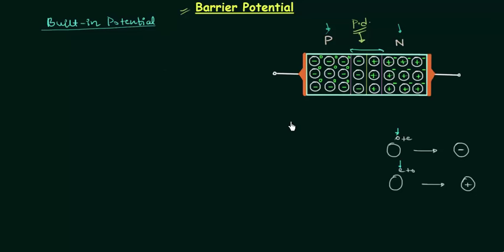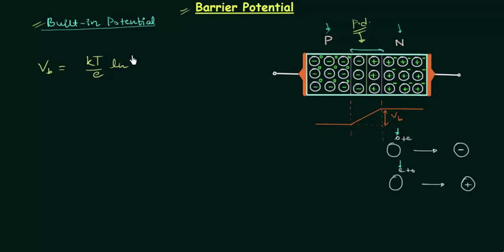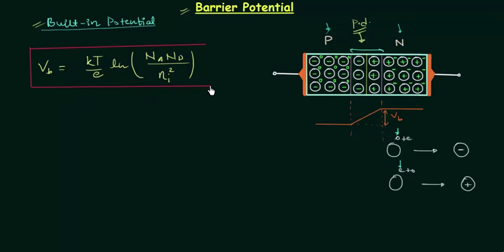This potential difference is also called built-in potential. In this lecture we will see the expression for built-in potential and solve one numerical problem on it. The expression is: V_B = (KT/e) × ln(Na·Nd / Ni²). The derivation is not important in this course — you only have to remember this formula and use it to find barrier potential.